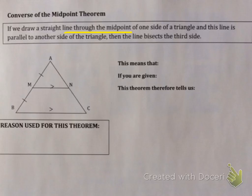It says if you have a straight line through one midpoint and it's parallel to the side of the triangle, so what they're giving you this time is one midpoint and the line is already parallel. So M is a midpoint and MN is parallel to BC.